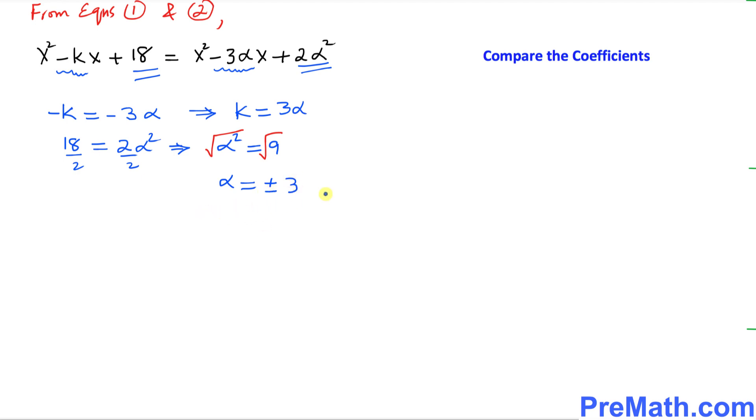That means I got two values of alpha. Alpha is positive three and alpha equals negative three. These are two values we got for alpha. Now, here is the next thing we're going to do.